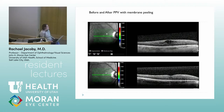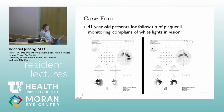This is a postoperative appearance after epiretinal membrane peel within a month — there's been some improvement in vision but he's still 20/40. Surgery can help but it's not always perfect, and sometimes the foveal contour never returns to what it looked like decades ago.